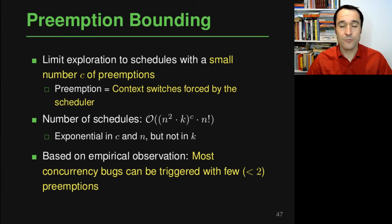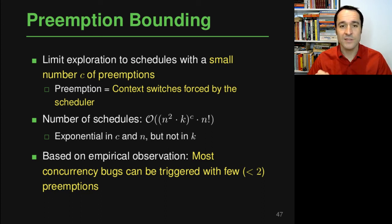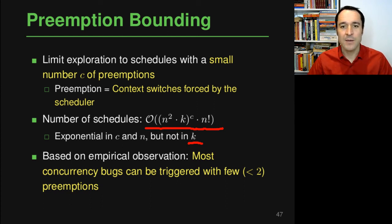To still be practical, CHESS implements a clever idea called preemption bounding. The basic idea is to limit the number of times the scheduler switches from one thread to another — each such switch is called a preemption — and limit this number to a small constant c. With this bound, the number of schedules the scheduler must explore is on the order of a formula that is still exponential in c and n, but not anymore in k. Since k — the number of instructions per thread — is what grows very large in real programs, this is a major improvement.